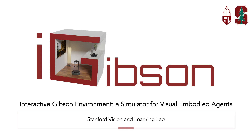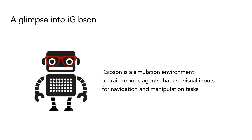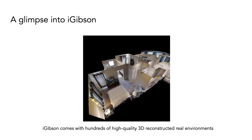iGibson, the interactive Gibson environment, is a simulator for visual embodied agents. iGibson is a simulation environment to train robotic agents that use visual inputs, like color images, depth images, or lidar, to achieve navigation and manipulation tasks.